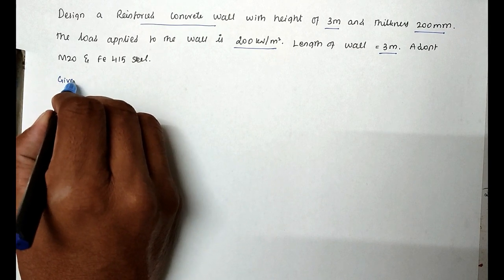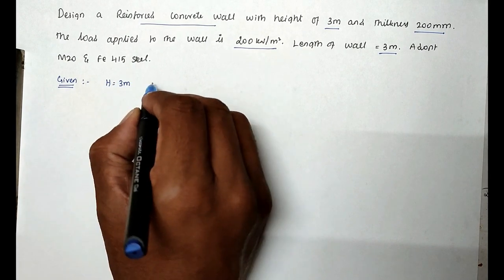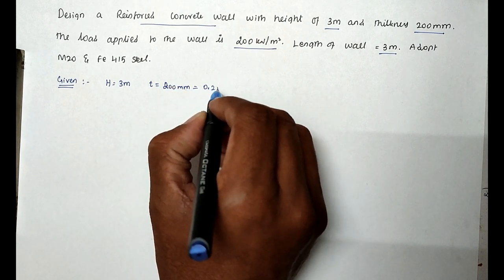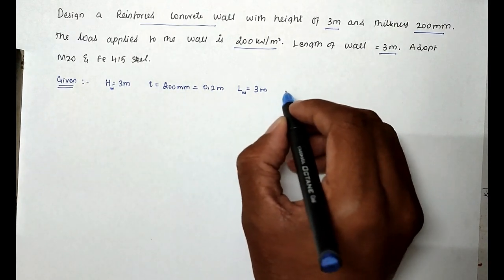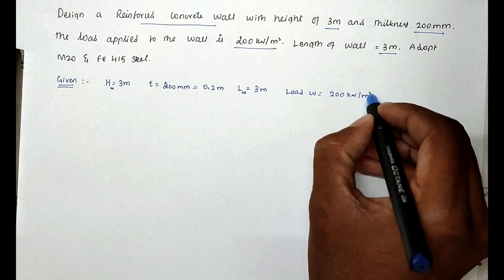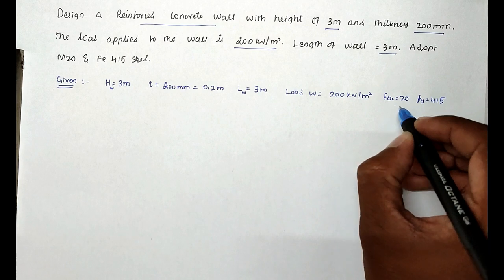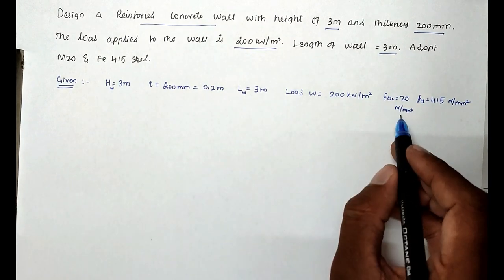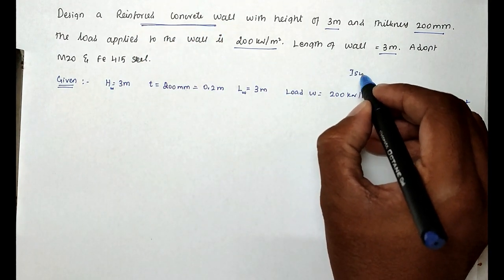The given values are: height of wall H = 3 m, thickness of wall T = 200 mm (0.2 m), length of wall LW = 3 m, HW = 3 m, load W = 200 kN/m², FCK = 20 N/mm², and FY = 415 N/mm². We have to design this shear wall in accordance with IS456-2000.